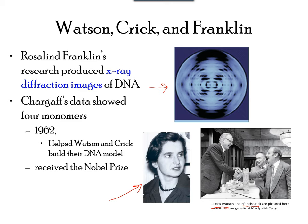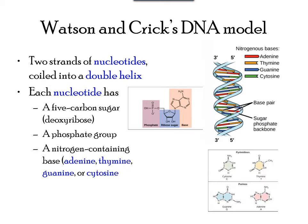Another scientist, Erwin Chargaff, proposed that DNA is composed of four kinds of molecules called nucleotides. He further presented that two types of DNA molecules were always present in equal amounts, and another two types were always present in equal amounts.